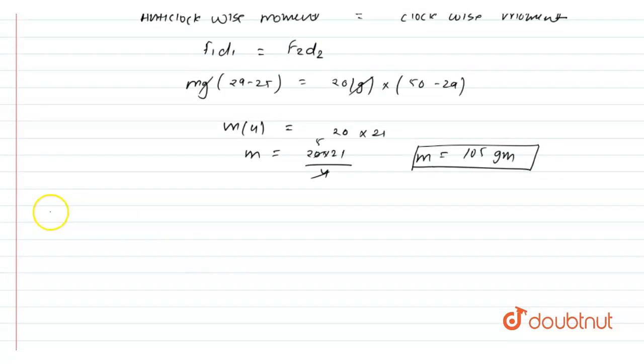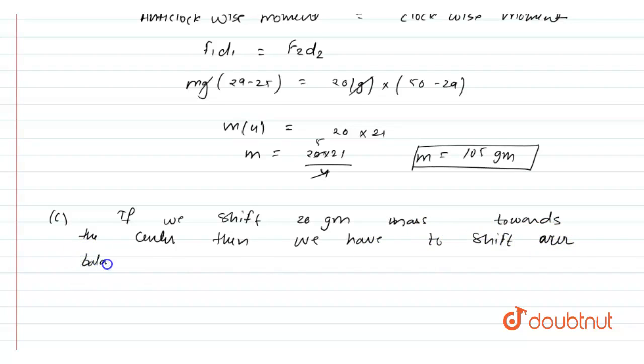So the third part will be if we shift 20 gram mass towards the center, then we have to shift our balancing point to anticlockwise direction.